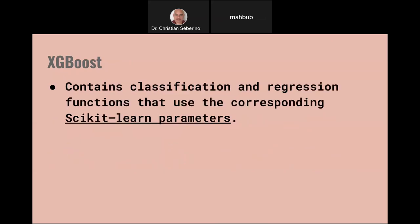It gets even better. If you use Scikit-Learn, you don't have to memorize a whole new nomenclature for XGBoost. They have wrapper classes that use the same naming conventions as Scikit-Learn. There's a class called XGBClassifier and XGBRegressor, which use Scikit-Learn parameters — a nice feature to make things easier.